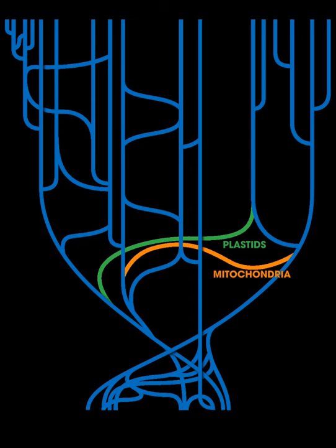The Adzuki bean beetle has acquired genetic material from its endosymbiont Wolbachia. New examples have recently been reported demonstrating that Wolbachia bacteria represent an important potential source of genetic material in arthropods and filarial nematodes.